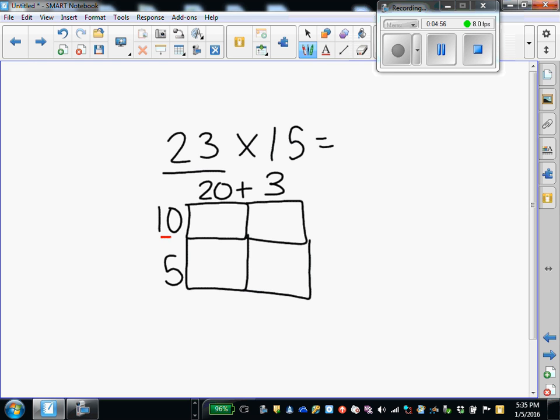10 times 20. 1 times 2 is 2. I have two zeros, 200. 10 times 3, 30. Now, I'm ready to multiply 5 by 20 and 5 by 3. 5 times 20 gives me 100. 5 times 3, 15.